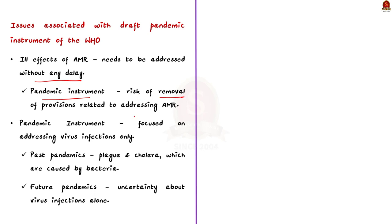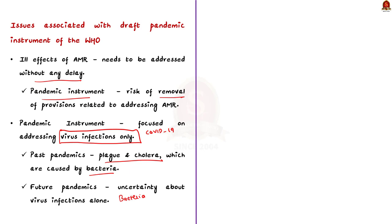Apart from this, some experts say that the pandemic instrument has focused on preventing pandemics that resemble COVID-19, meaning the instrument has focused on addressing viral infections only. But if we look back, the past pandemics have been caused not only by viruses. There were also other pandemics such as plague and cholera that were caused by bacteria. And it is not certain that all pandemics in the future will be caused by viruses alone — there is also a possibility that the next pandemic could be caused by bacteria or any other microbes. So overall, the pandemic instrument does not address pandemics caused by microbes other than viruses.